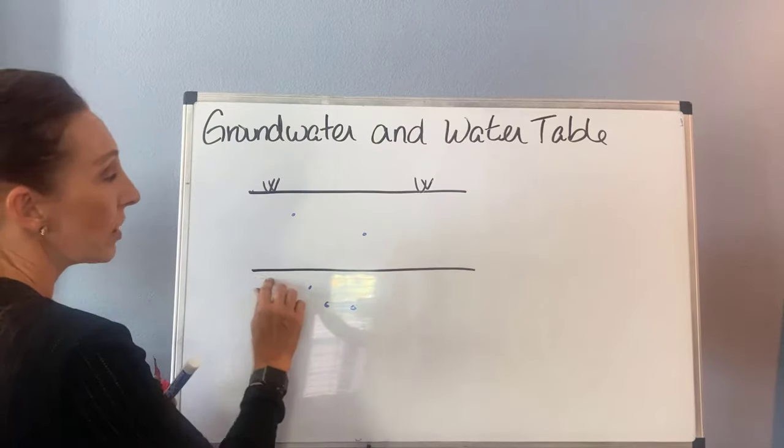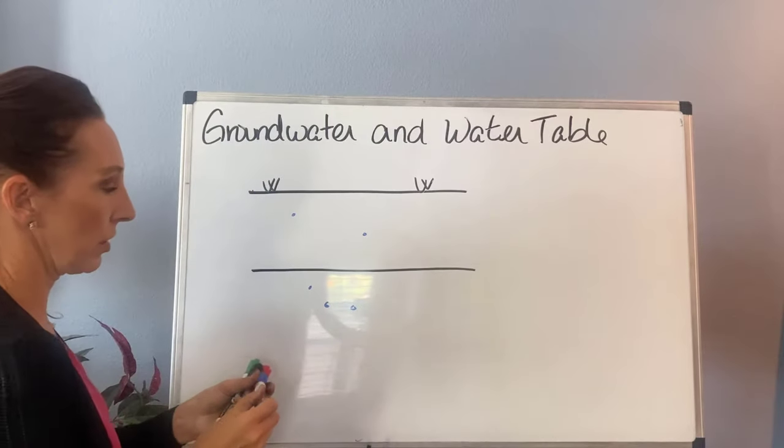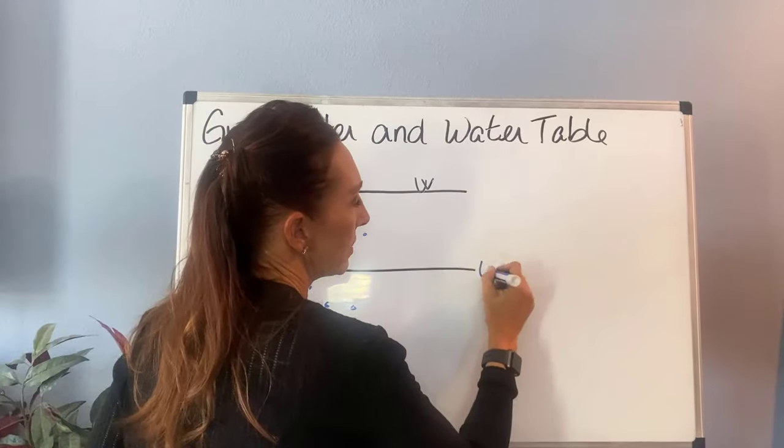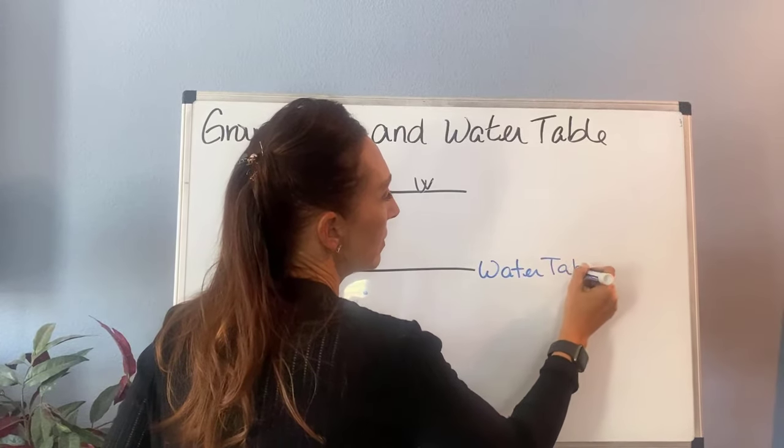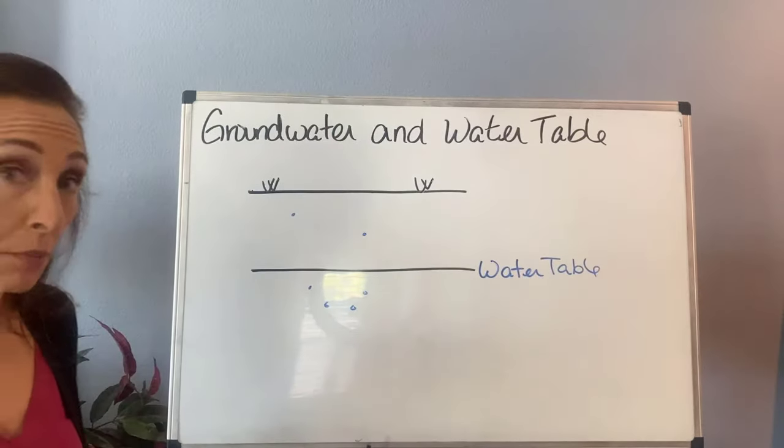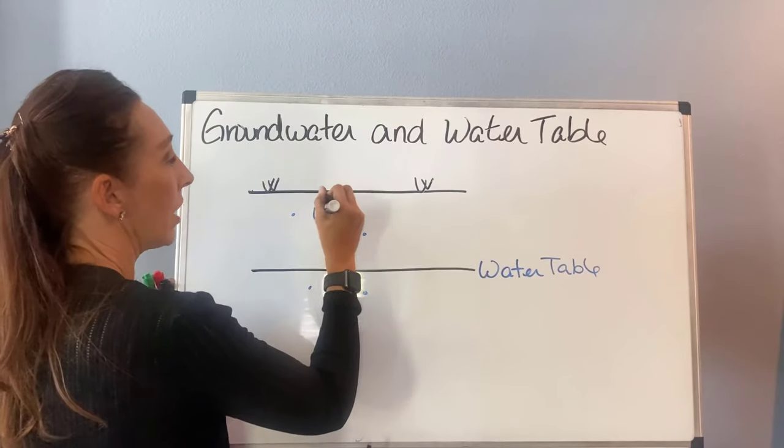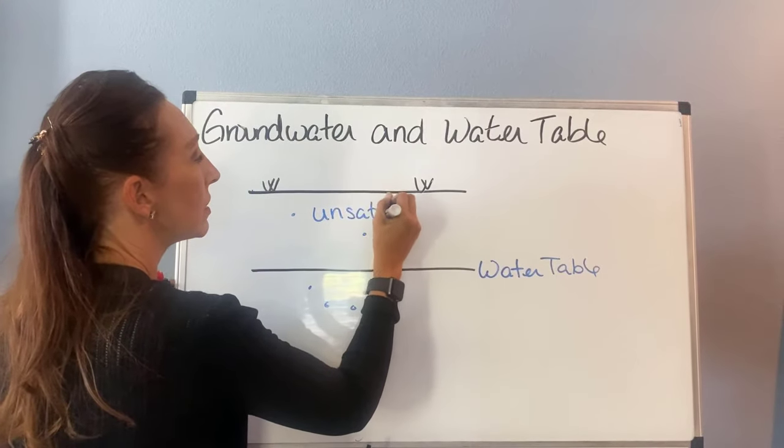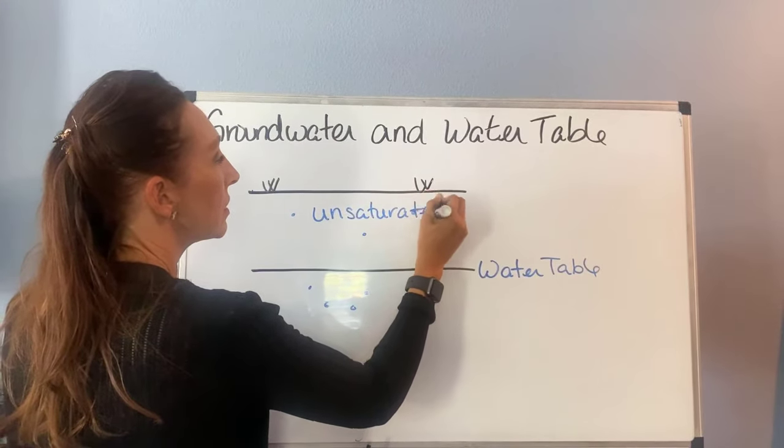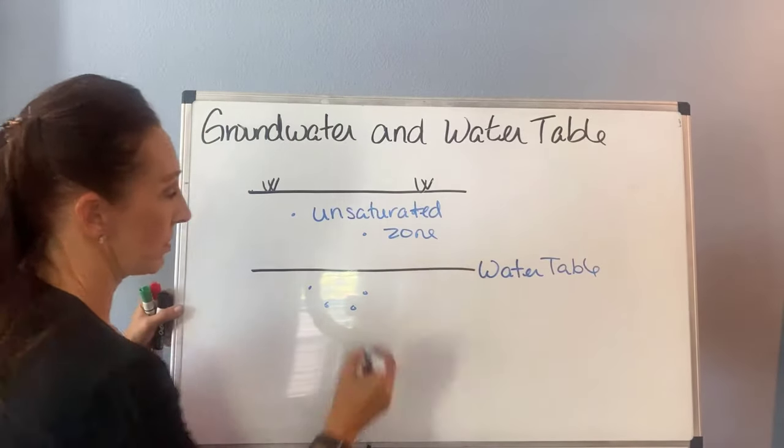Now the water table. I've drawn this line here, and here's the exciting part: this is the water table. This line separates what's called the unsaturated zone from the saturated zone.